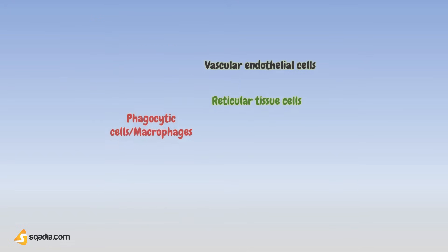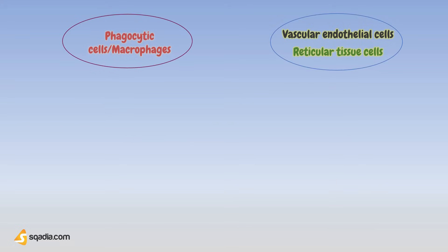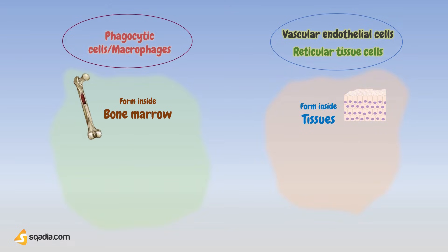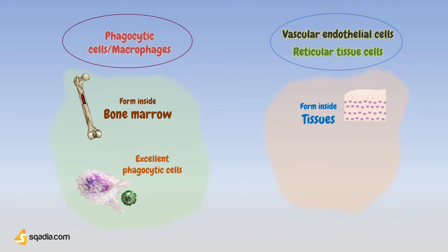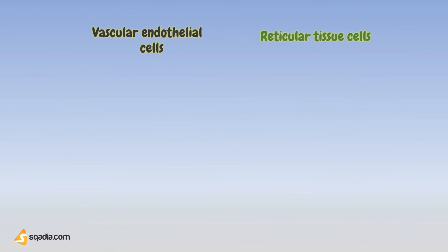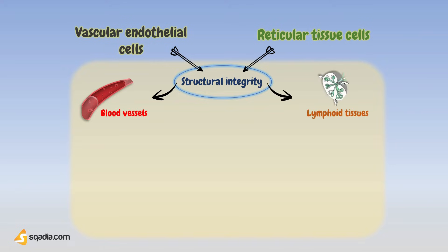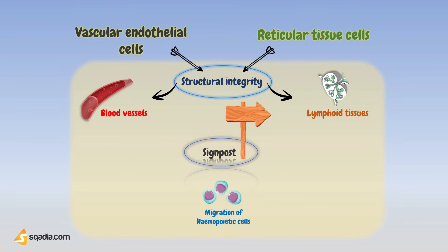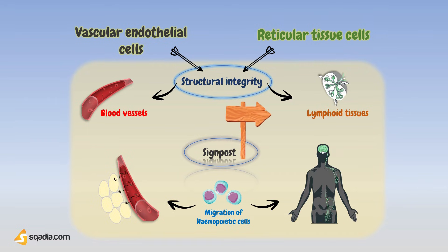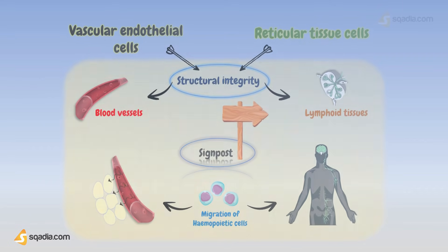However, there is a fundamental distinction between phagocytic cells and endothelial and reticular cells. Phagocytic cells are derived from the bone marrow, or myeloid cells, while endothelial and reticular cells form locally from the tissues themselves. Also, phagocytic cells, as the name implies, are excellent phagocytes, but neither reticular nor endothelial cells are outstandingly phagocytic. In fact, the main function of both vascular endothelial and reticular cells is partly structural — they play a role in maintaining the integrity of the lymphoid tissue and blood vessels, respectively. However, both cell types have an equally important role as signposts, regulating the migration of hemopoietic cells from blood into the tissues and through the various sub-compartments of lymphoid tissue.